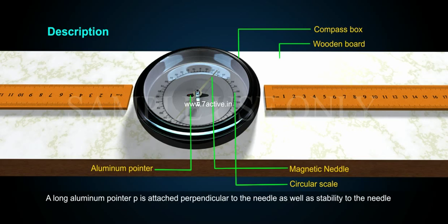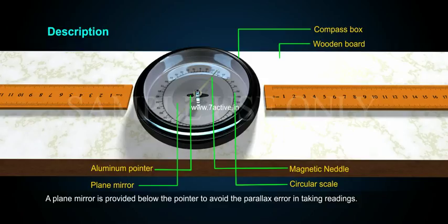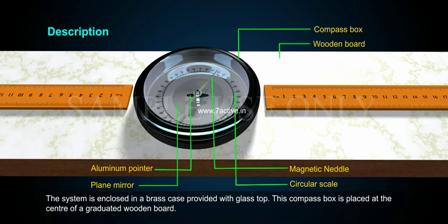A long aluminum pointer is attached perpendicular to the needle to add stability. A plain mirror is provided below the pointer to avoid parallax error in taking readings. The system is enclosed in a brass case provided with glass top. This compass box is placed at the center of a graduated wooden board.